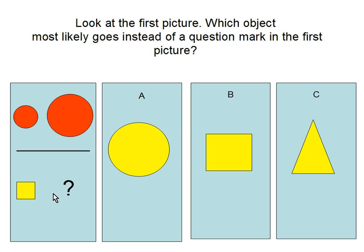The first picture shows a little circle and a big circle and the second is a small square. So the answer is B because there should be a bigger image of the same shape.